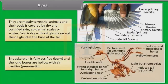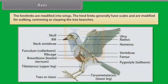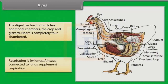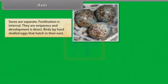The long bones are hollow with air cavities (pneumatic). The forelimbs are modified into wings. The hind limbs generally have scales and are modified for walking, swimming or clasping tree branches. The digestive tract of birds has additional chambers — the crop and gizzard. Heart is completely four-chambered. Respiration is by lungs. Air sacs connected to the lungs supplement respiration. Sexes are separate. Fertilization is internal. They are oviparous and development is direct. Birds lay hard-shelled eggs that hatch in their nest.